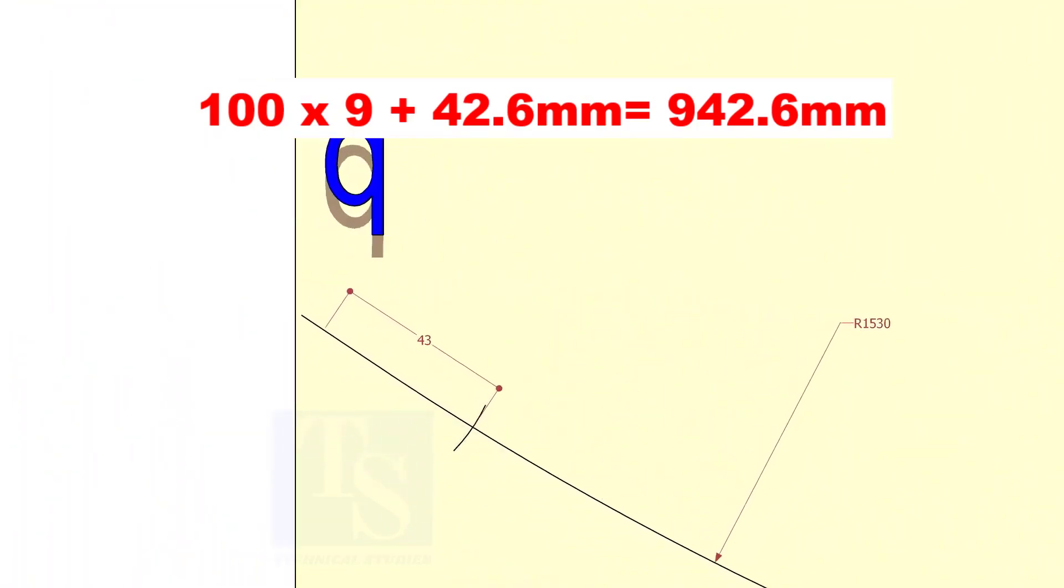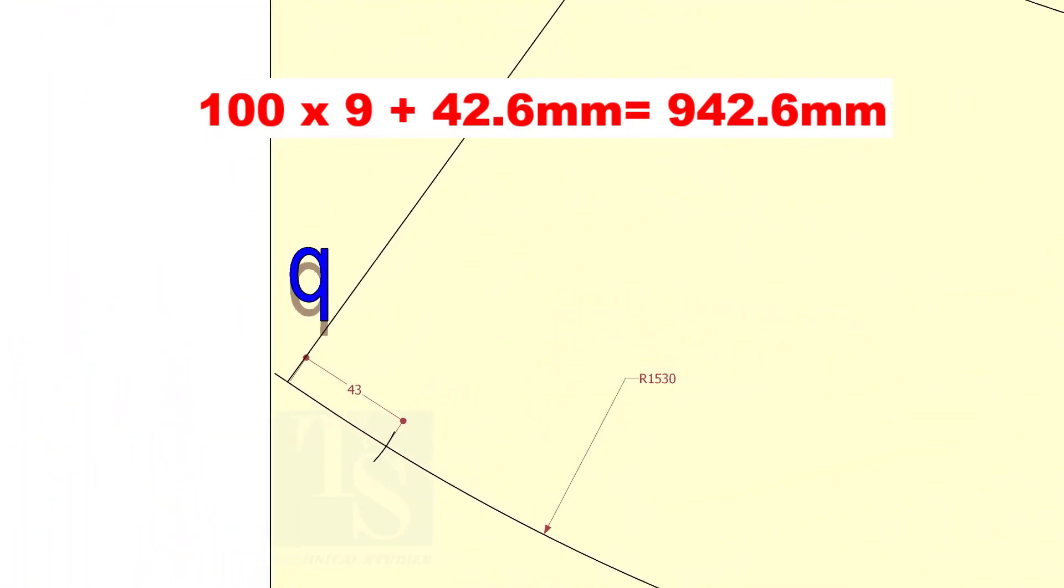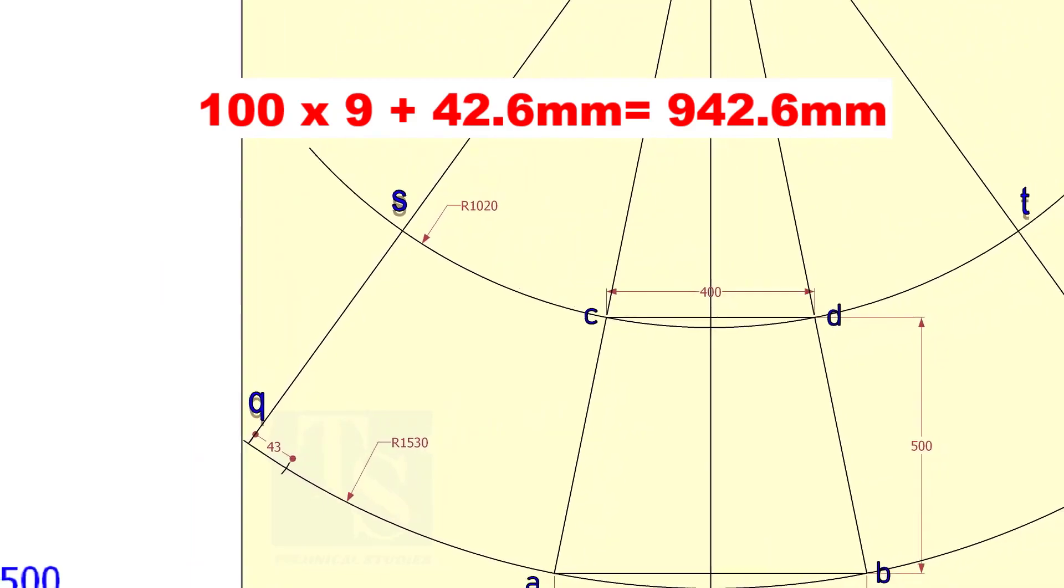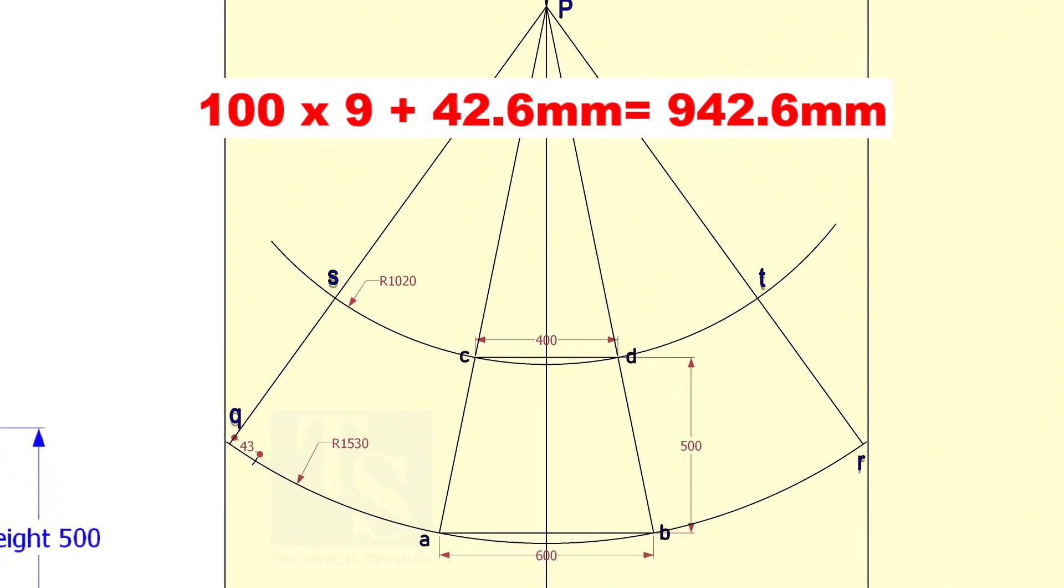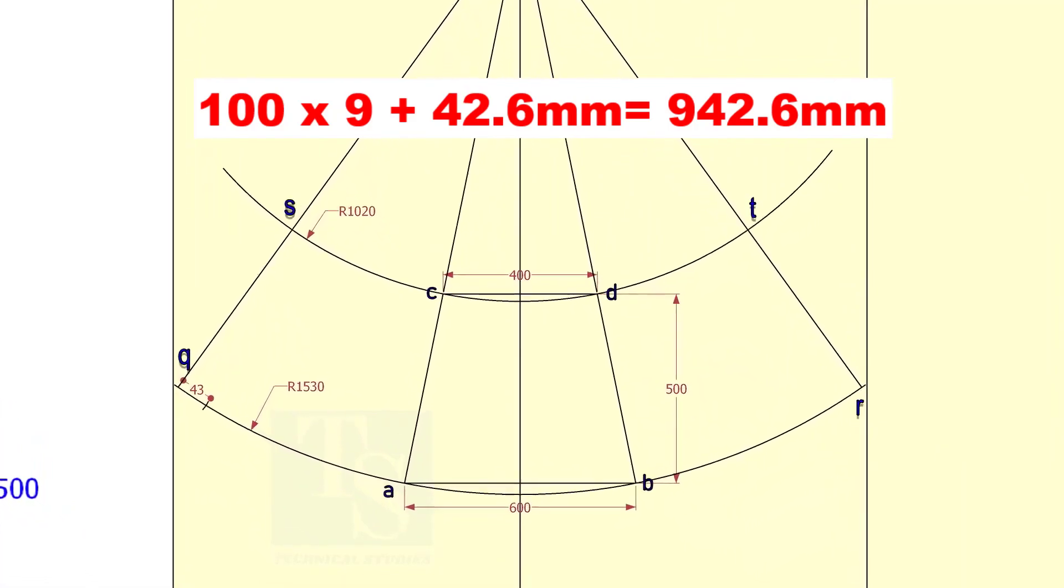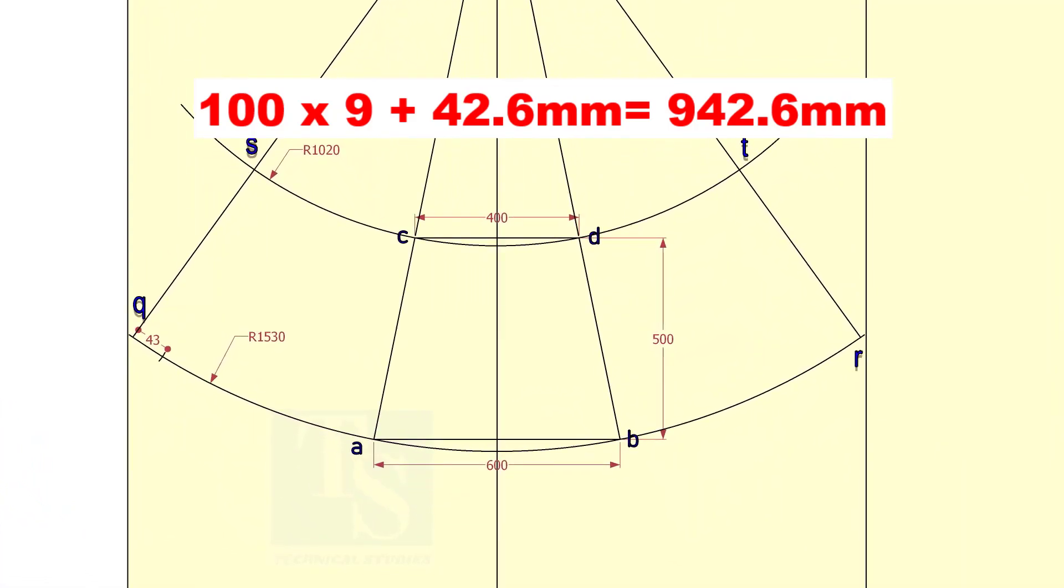Add the 42.6 mm at the end of 900 mm on both sides of the center line. Draw lines connecting this point to P. Draw arcs from the center to both sides of the center.